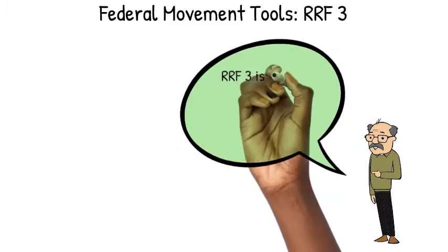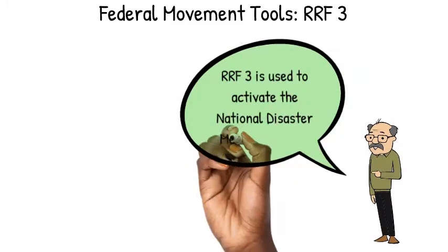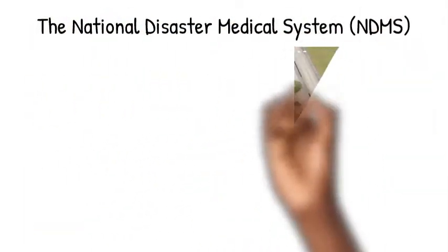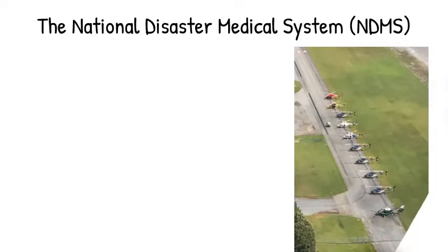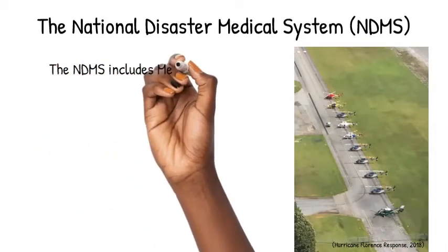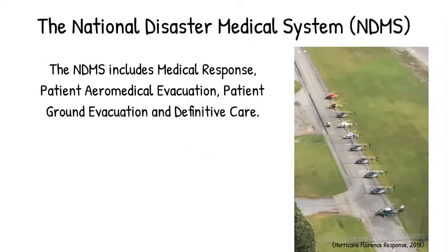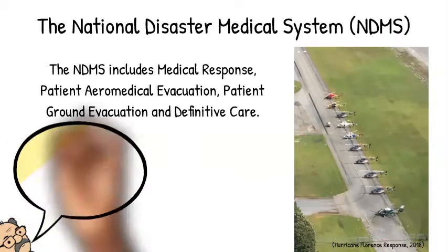Federal movement tool RRF3 is used to activate the National Disaster Medical System (NDMS), which is a full federal system to respond to medical incidents throughout the country. The NDMS includes medical responders, air resources, patient ground evacuation resources, and definitive care resources — all coordinated together under the federal umbrella.